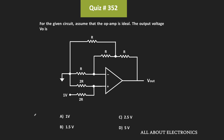Hey friends, welcome to the YouTube channel all about electronics. In this question, we have been given an op-amp circuit and we have been asked to find the output voltage. The input voltage is equal to 1V and the given op-amp is the ideal op-amp.